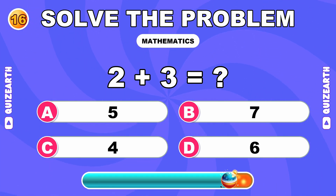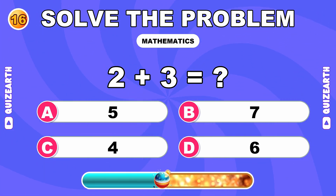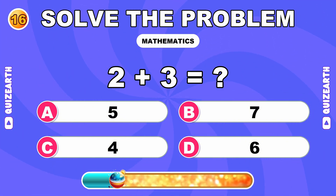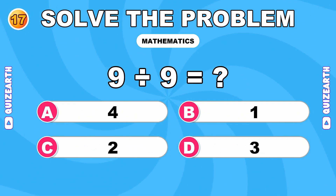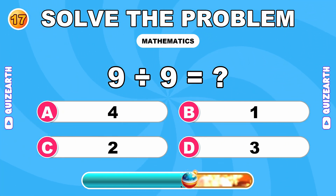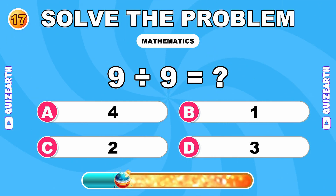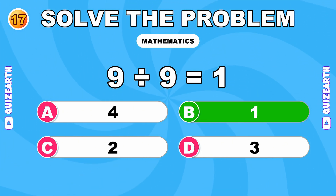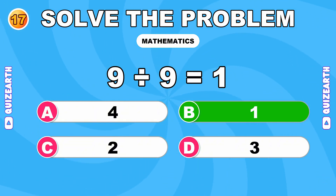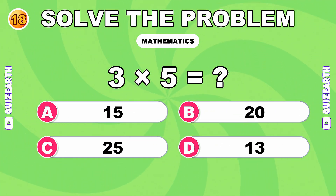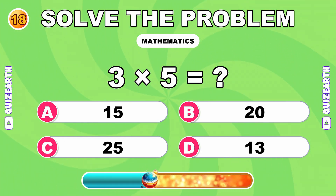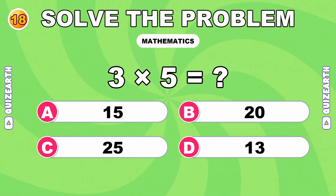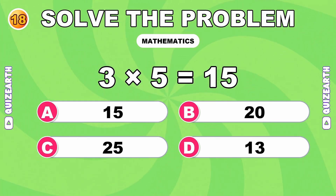What is 2 plus 3? You're in the zone. The answer is 5. How much is 9 divided by 9? Lightning quick. The answer is 1. What do you get when you multiply 3 by 5? On fire. The answer is 15.